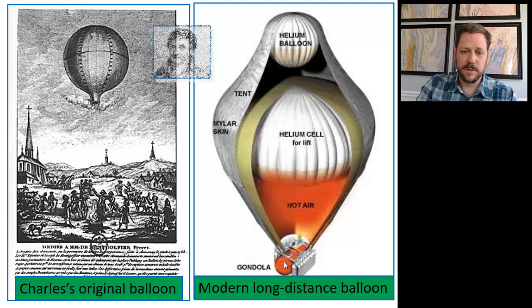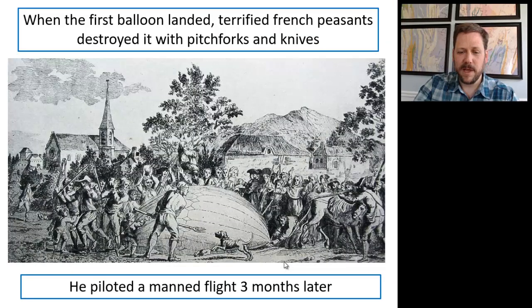Now, it is true that at one point in time, his unmanned balloon landed into a field where terrified French peasants destroyed it with pitchforks and knives. And I can't help when I look at this lithograph of the terrified French peasants, can't help but imagining this face being on one of them. There's Gaston leading the charge to pitchfork the strange UFO that's landed in their field.